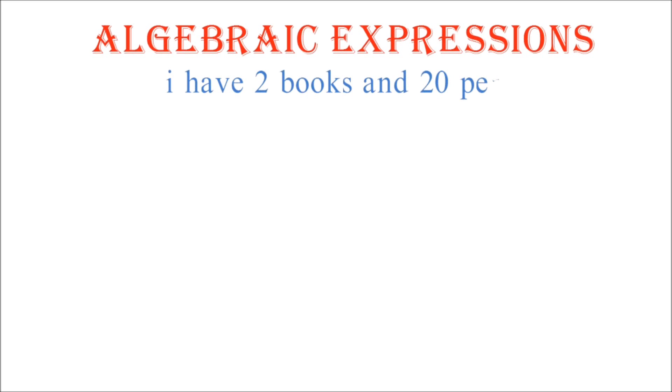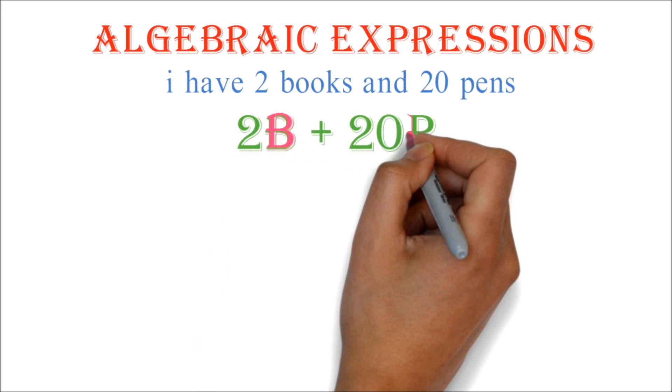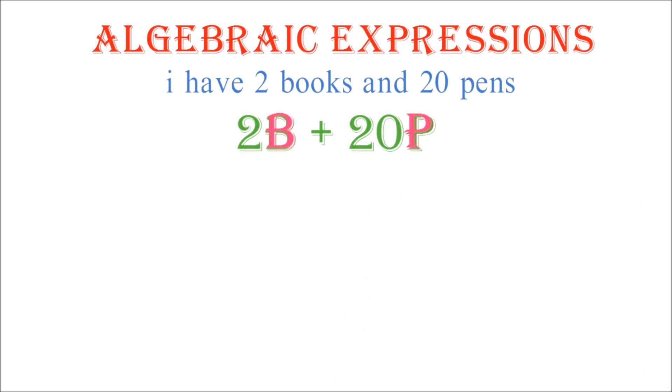...as 2b plus 20p, where b represents books and p represents pens. This idea of representation is what is called an algebraic expression.